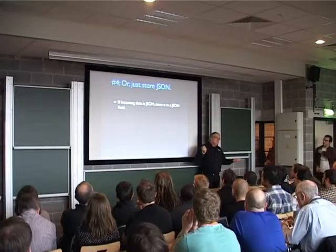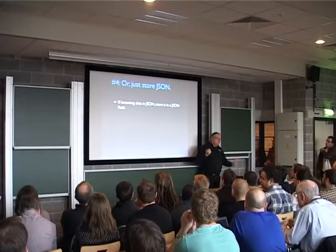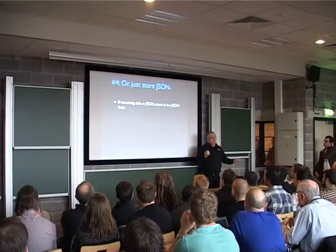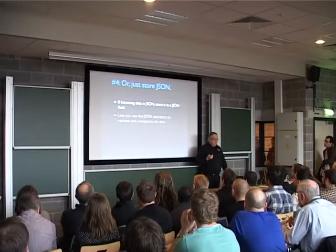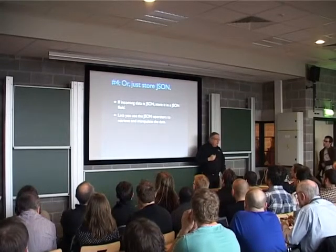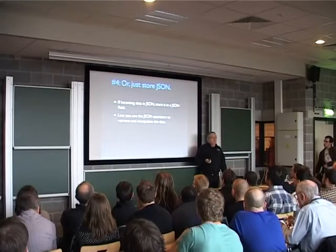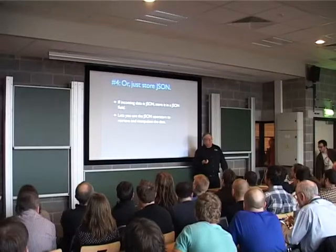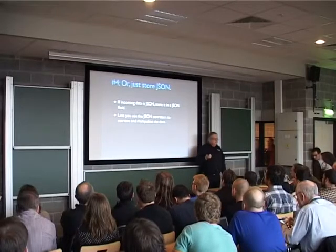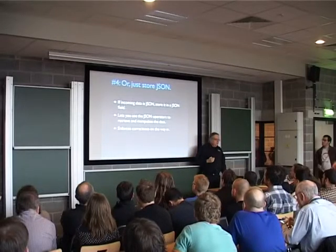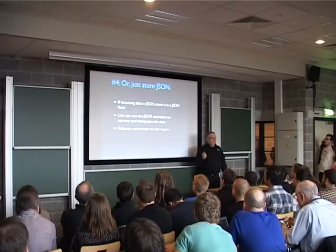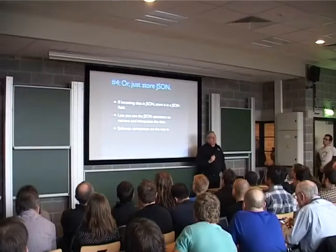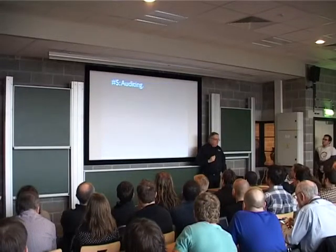Sometimes you just have a JSON thing you need to store. Postgres validates it, which is really nice. That gives you the full set of JSON operators to use to return and manipulate the data. And it enforces correctness on the way in so you don't have bad JSON blobbing things up.